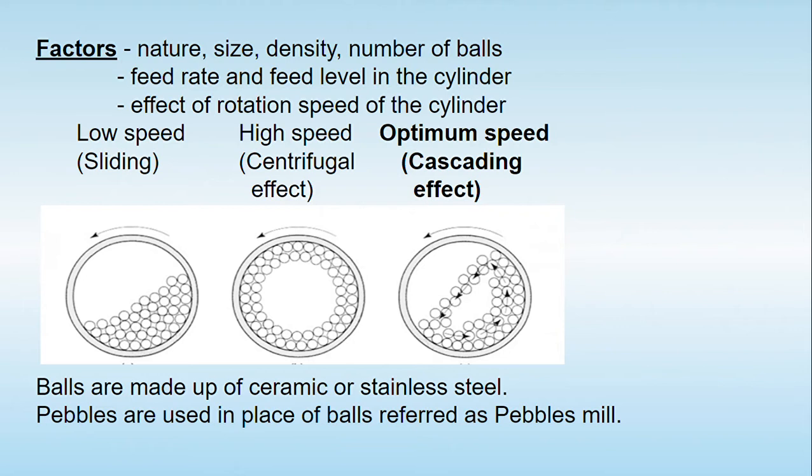The second factor is the feed rate and the feed level inside the cylinder — meaning at what rate the material undergoing size reduction is introduced, and what is the amount of that material present inside the cylinder.